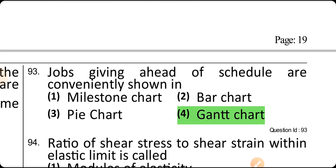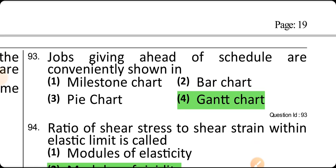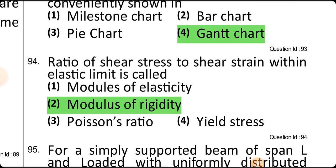Jobs given in order of schedule are conveniently shown in a Gantt chart. The ratio of shear stress to shear strain is called the modulus of rigidity. Poisson's ratio is the ratio of lateral strain to longitudinal strain.